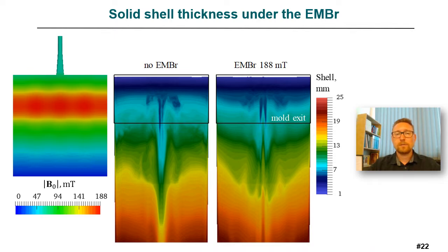The redistribution of the melt flow under the applied magnetic field leads to more even shell thickness in the MBR case, which is seen in comparison between the left and right pictures of the shell thickness.